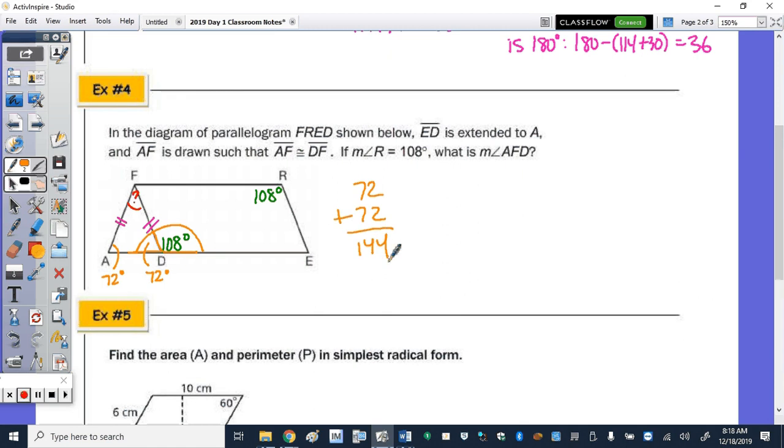So looking at, lastly, the triangle AFD, which has an interior angle sum of 180, 180 minus 144 is 36 degrees. So that is equal to the measure of angle AFD.